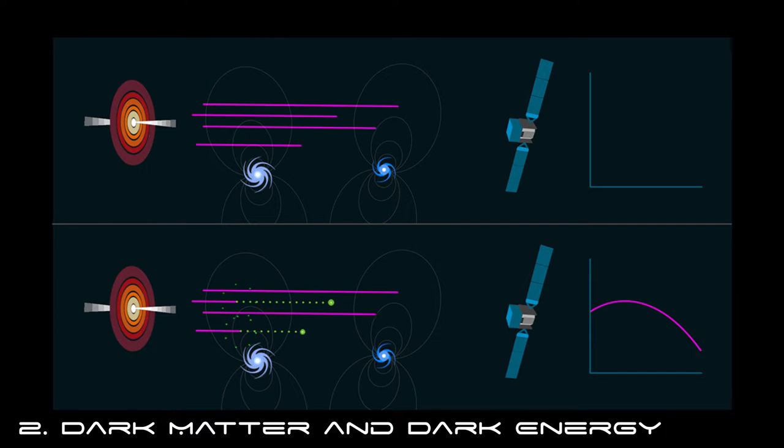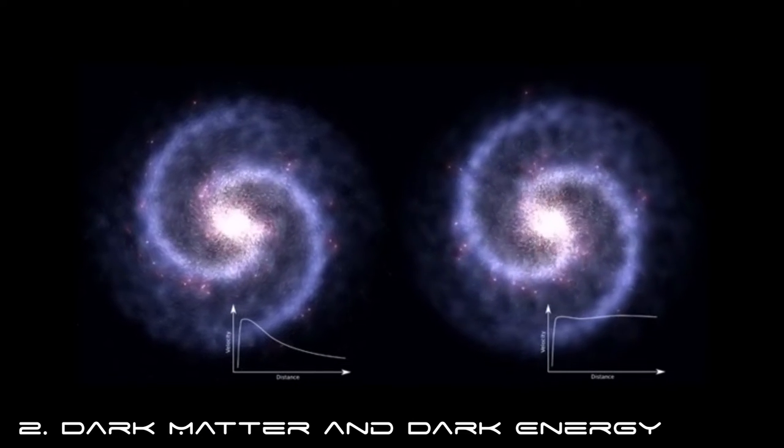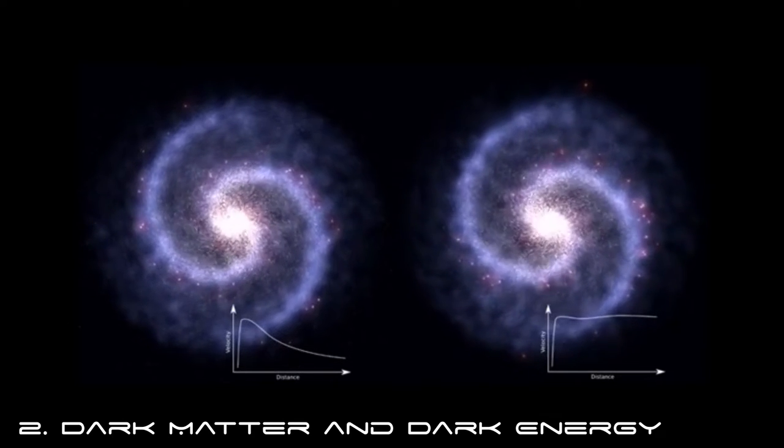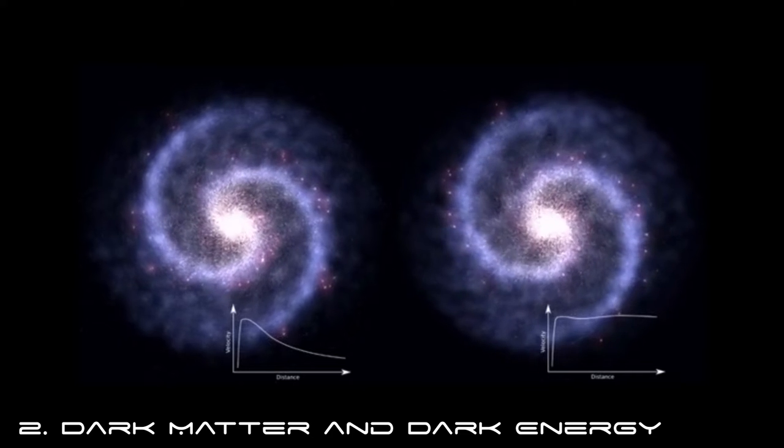The second main science goal is to further study dark matter and dark energy. These are of course some of the biggest questions in physics today, and a lot of our theories and observations rely on it. The LSST will be able to make many more observations that tell us further about how dark matter and dark energy behave.